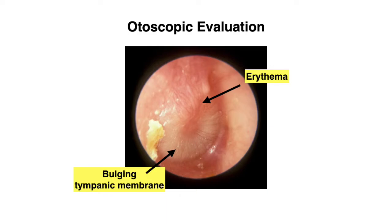Another finding is a bulging tympanic membrane, and this is actually a hallmark finding in acute otitis media — it is much more specific than erythema. This is because a bulging tympanic membrane indicates both acute inflammation and a middle ear effusion. In this photo, we actually do see some whitish to yellowish exudate lying behind the tympanic membrane.